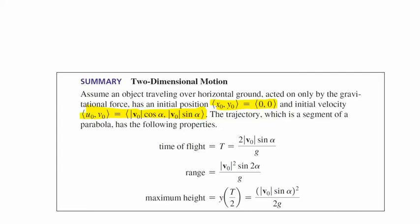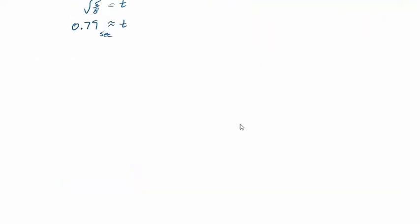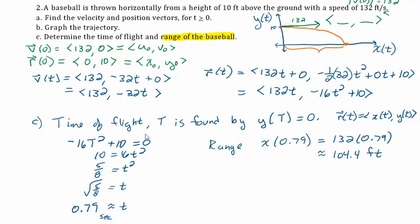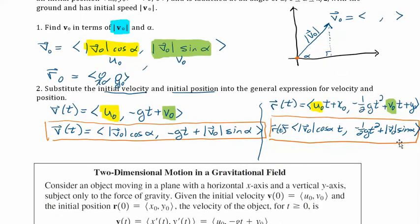Let's go back and look at the baseball example quickly. The time of flight T is found by figuring out where the y-component of the position function equals zero — that is, setting y(t) = 0 tells you the time it takes for the object to hit the ground. We'll do the same thing for this angle problem.